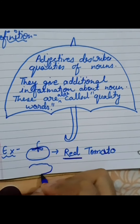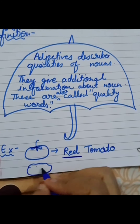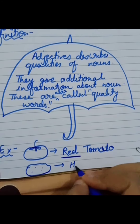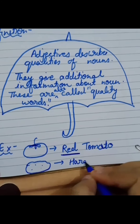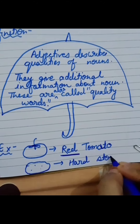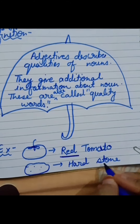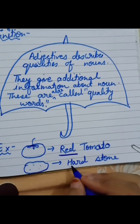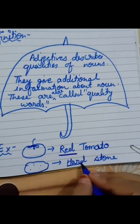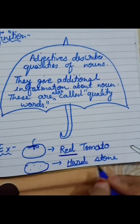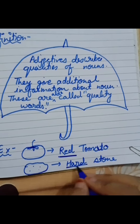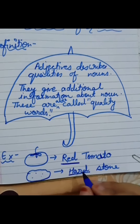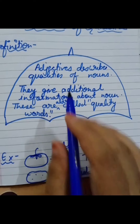There is a stone — 'hard stone.' Stone is a noun, and 'hard' is showing the quality of the stone. So 'hard' is called a quality word or adjective.